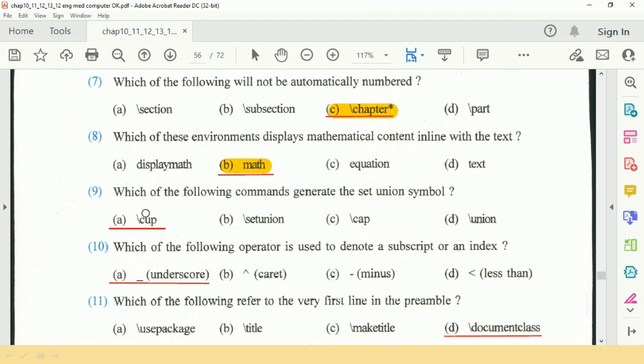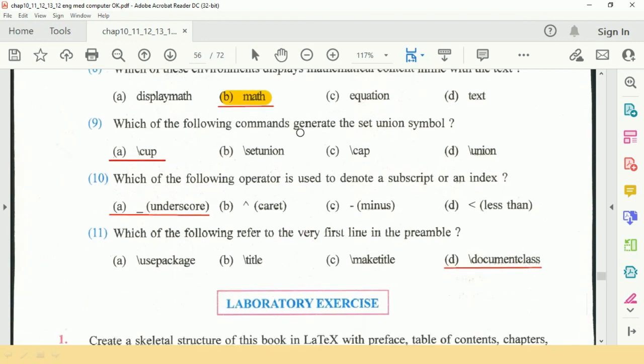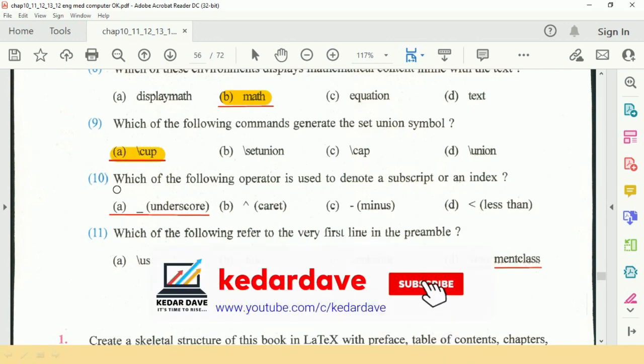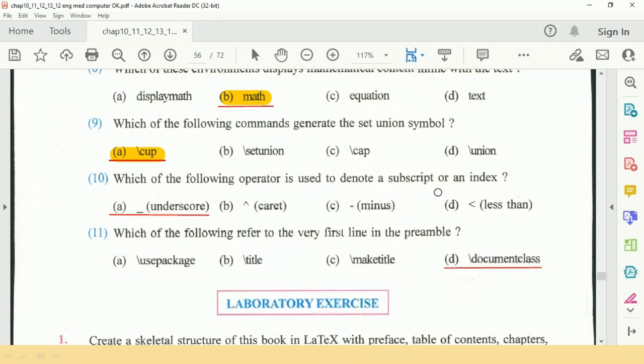Question number 9 is: Which of the following commands generate the set union symbol? Which of the following operator is used to denote a subscript or an index? So underscore is used.